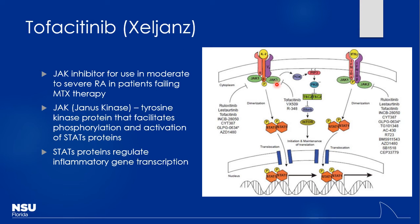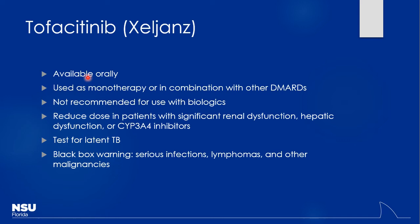By inhibiting these JAK proteins, you prevent STAT protein activation, so that gene transcription never happens. Very specific for their targets, so associated with a lot fewer side effects than methotrexate — tends to be quite effective, comparable to some of the monoclonal antibodies and other biologic DMARDs. The other nice thing is it's available orally, which is a one-up over monoclonal antibodies that have to be injectables. It can be used as monotherapy or in combination with other non-biologic drugs. However, it's not recommended to use this with biologics because it causes too much immune suppression.